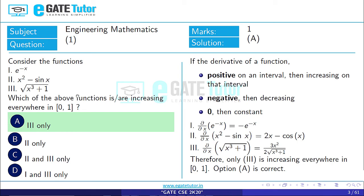Therefore, only III is increasing everywhere in the interval [0, 1]. Hence, option A is correct.